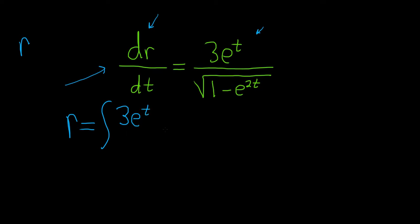So we have 3e to the t over the square root of 1 minus e to the 2t dt. So all we have to do now is figure out this integral. So there is a formula that you can use to do this problem.